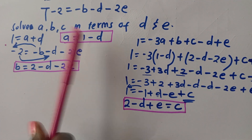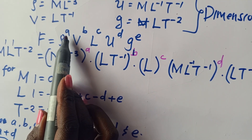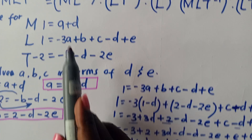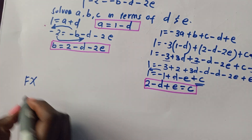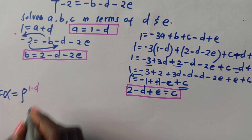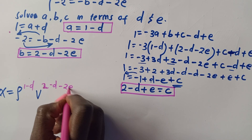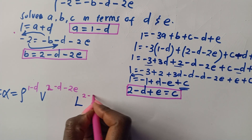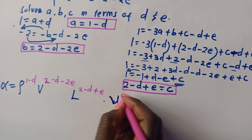Now substitute back. Wherever we have A, B, and C, replace with the values found. So F is proportional to: rho raised to (1 minus D), V raised to (2 minus D minus 2E), L raised to (2 minus D plus E), mu raised to D, and G raised to E.